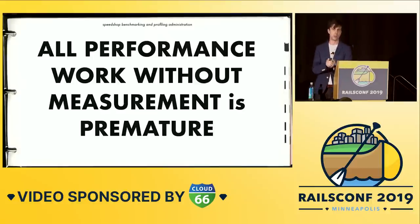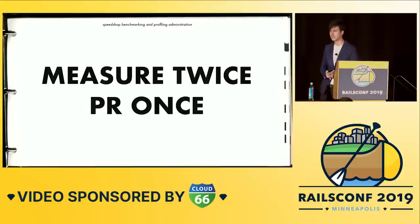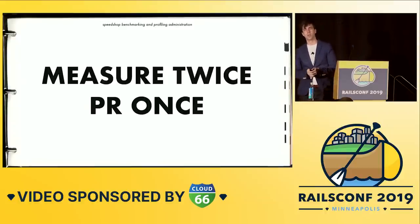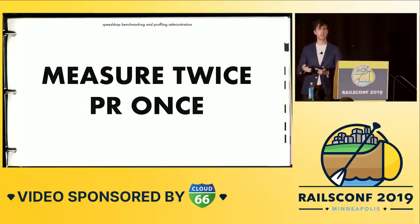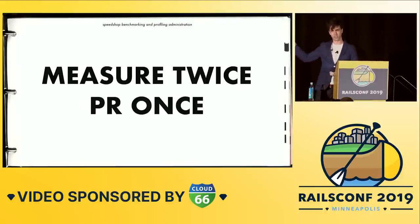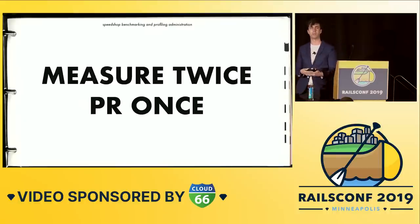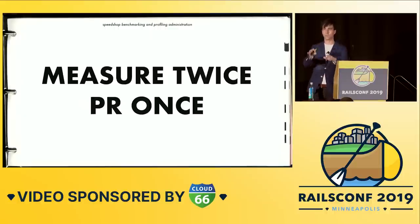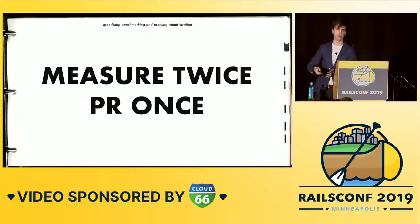It also saves us time. The number one thing that probably stops people from working more on performance is when they start working on it, they say, 'I've sped up this part of the code by 10x,' and then they deploy it, and it makes no difference to the application, because they weren't paying attention to what was happening in production. The method I'm going to teach you here today is to measure twice and PR once. If I can show you how to measure, show you how to replicate in development, it's going to be far more likely that the work you're going to do on improving performance in production is going to actually work when you deploy it.